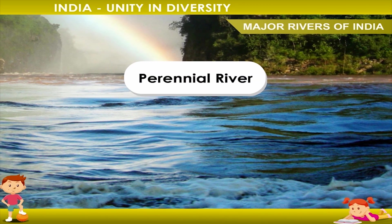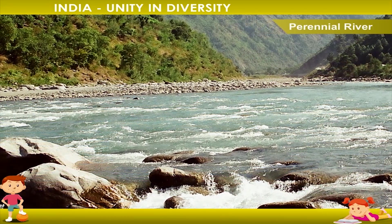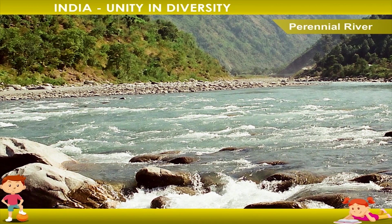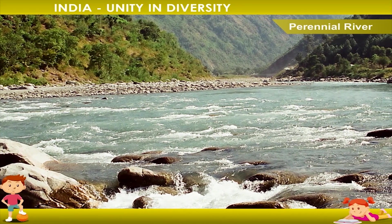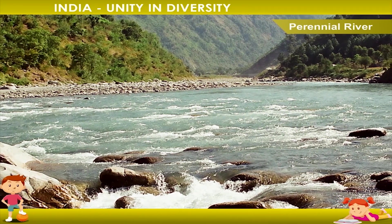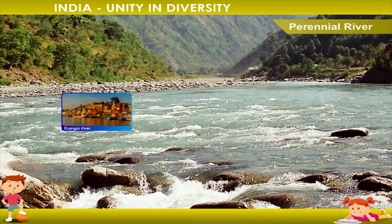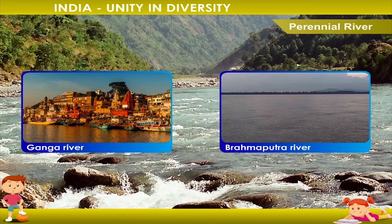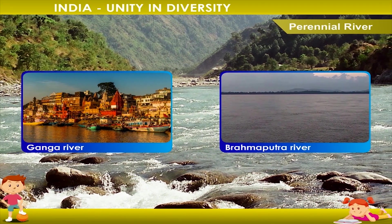1. Perennial Rivers. 2. Non-Perennial Rivers. Perennial rivers have continuous flow of water throughout the year except during drought periods. These rivers are also known as permanent rivers. Ganga and Brahmaputra are two perennial rivers, found in the northern plains of India.